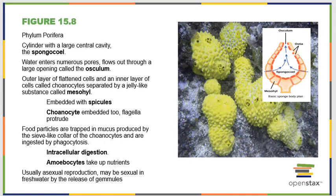Sponges usually undergo asexual reproduction, but it can actually be sexual. They can release eggs and sperm called gemmules into the water around them. These meet and form a zygote, which will find a new substrate to attach to, then grow and live out this long sessile body plan.